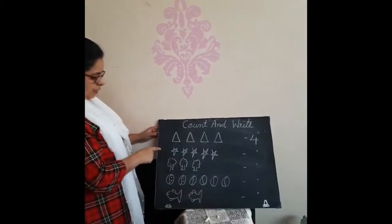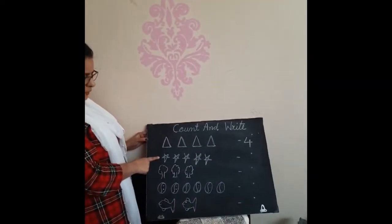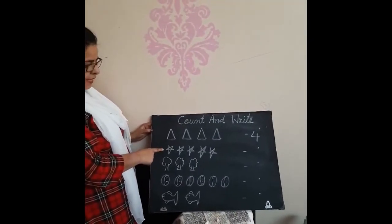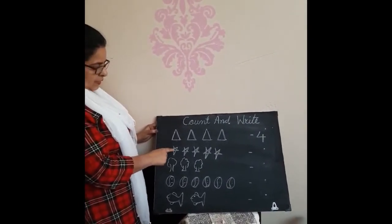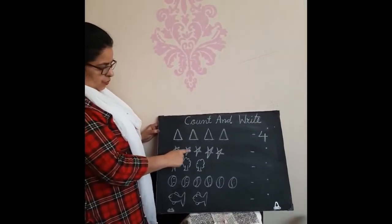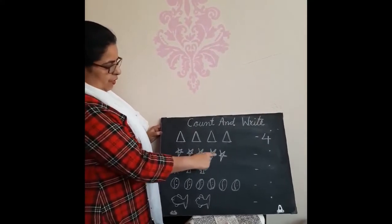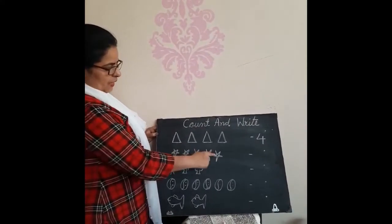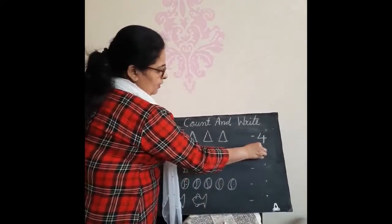Now next picture. These are stars. What are these? These are stars. 1, 2, 3, 4, 5. How many pictures are here? 5.